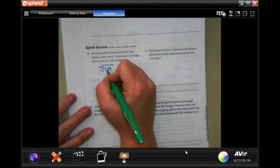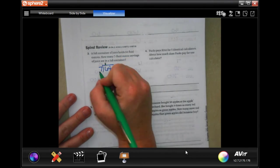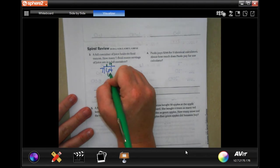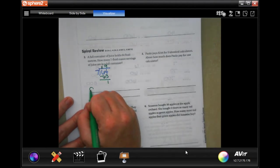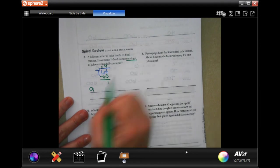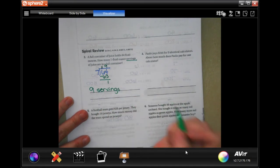Well seven doesn't go into six, placeholder, but seven times nine is sixty three and we have one left over, so nine servings.